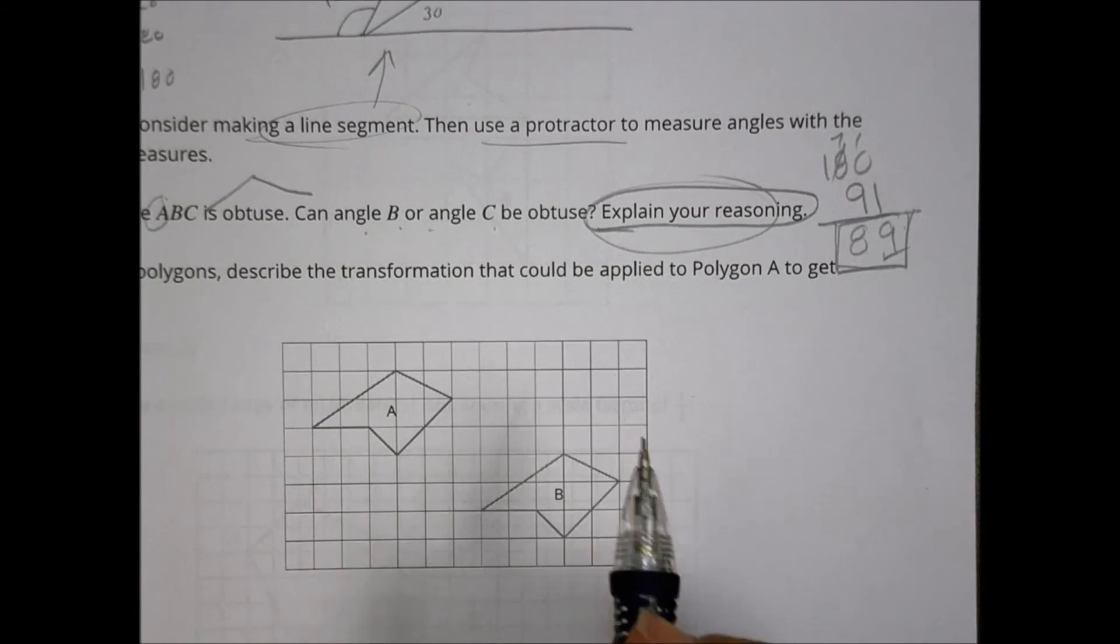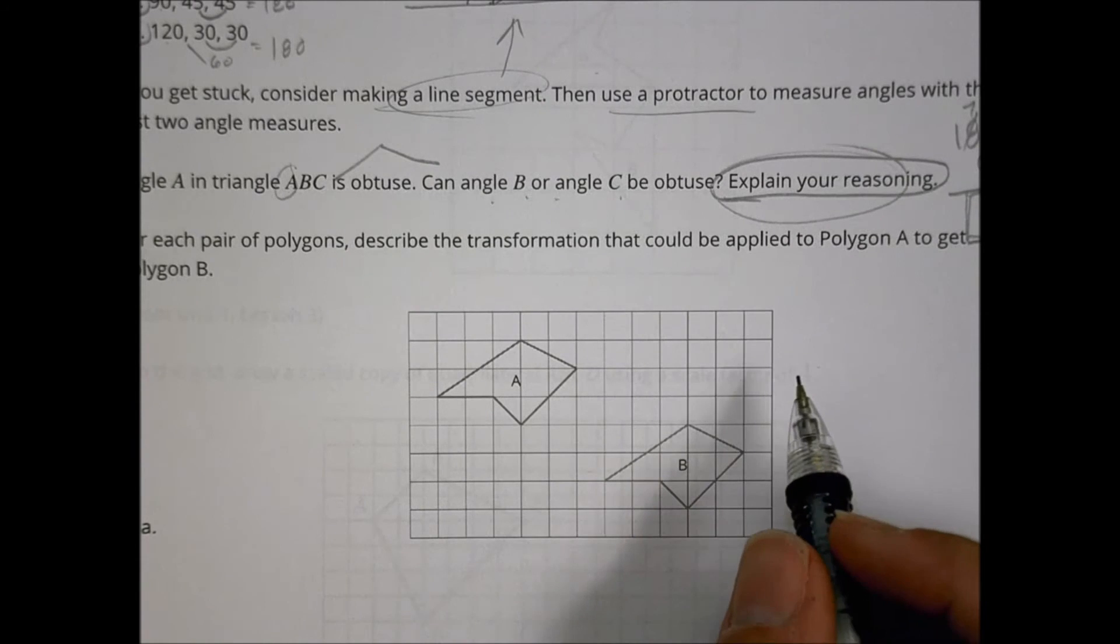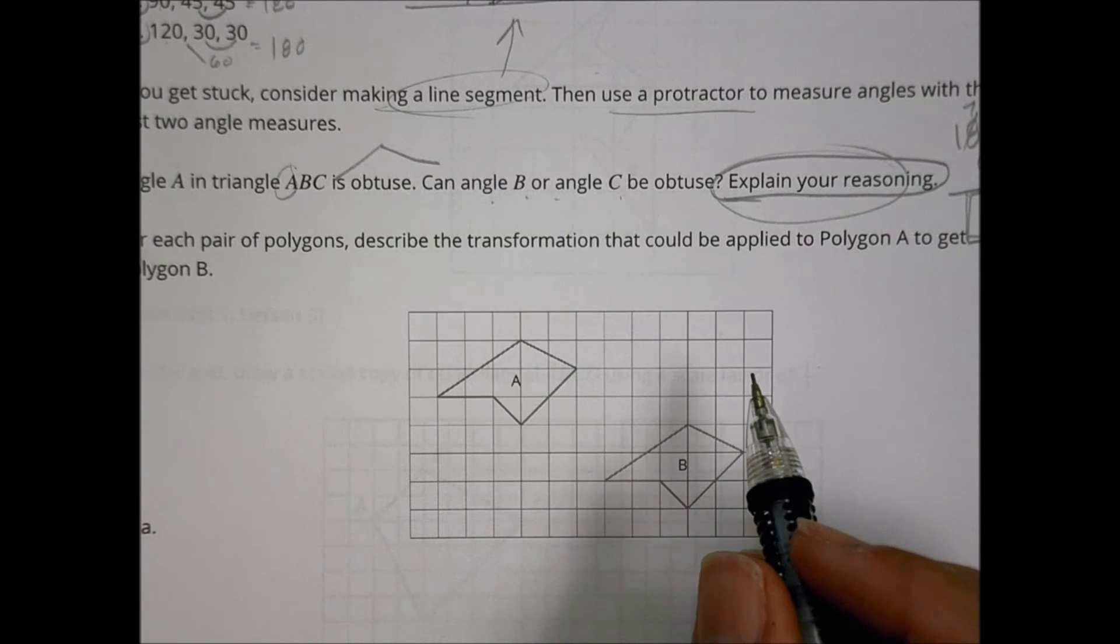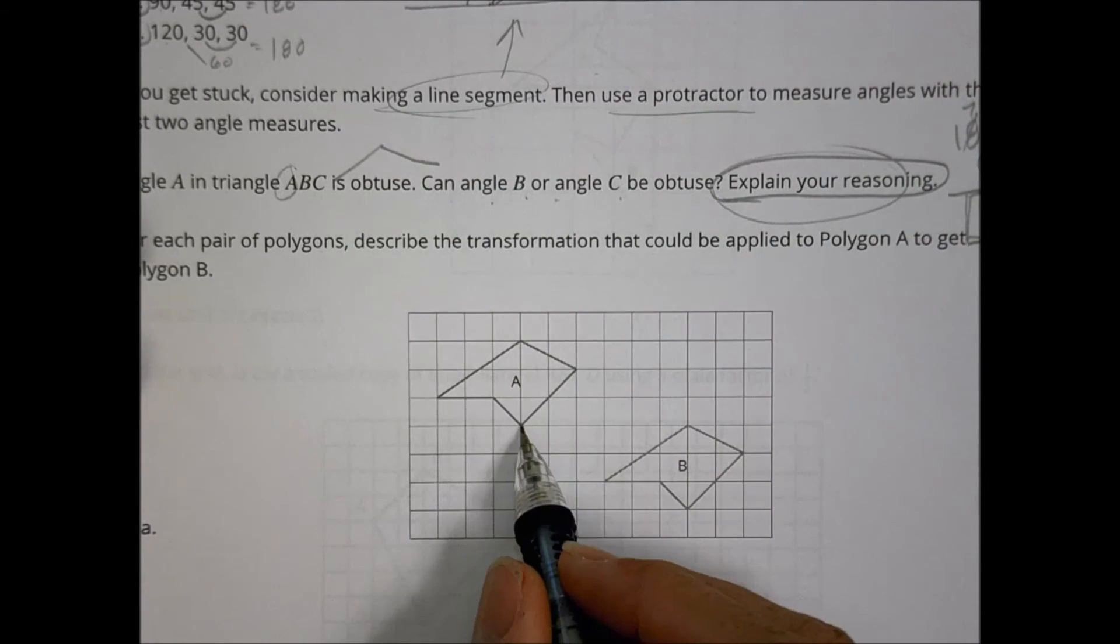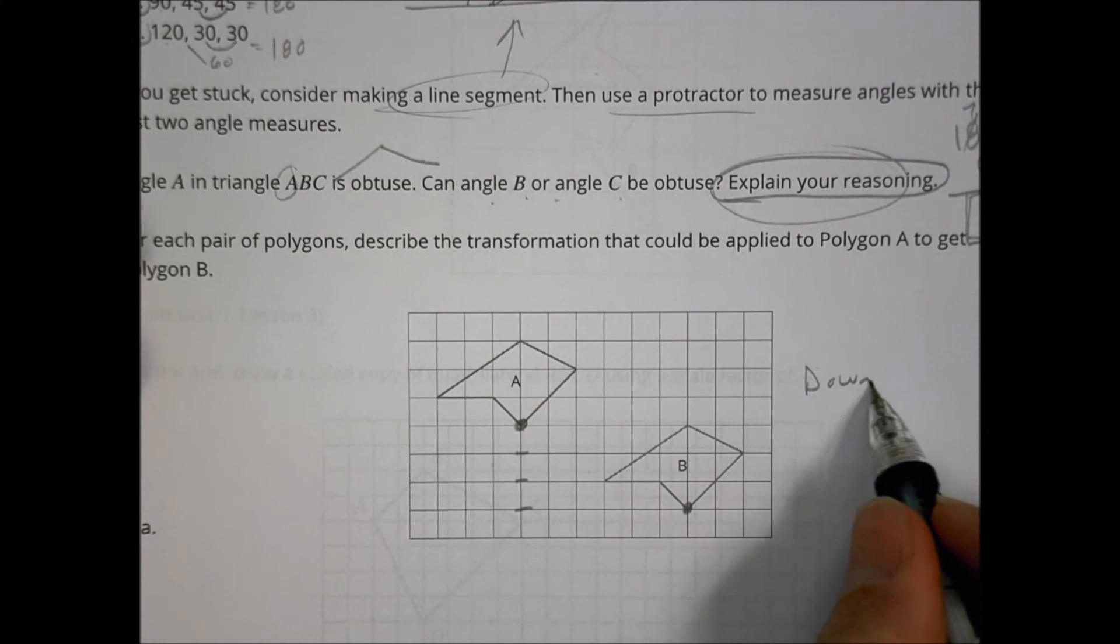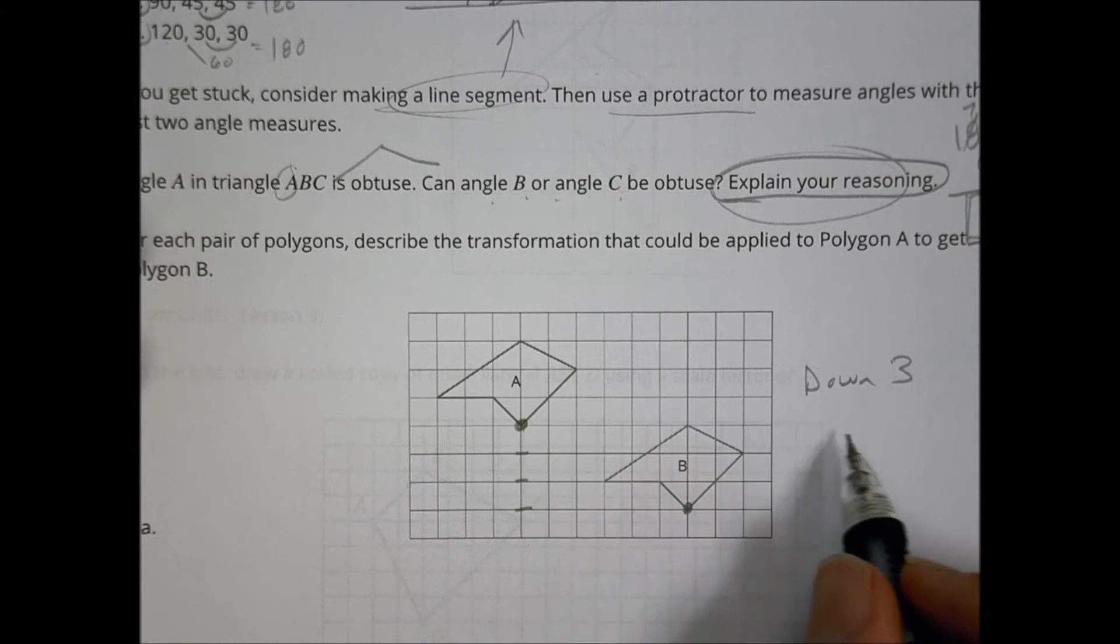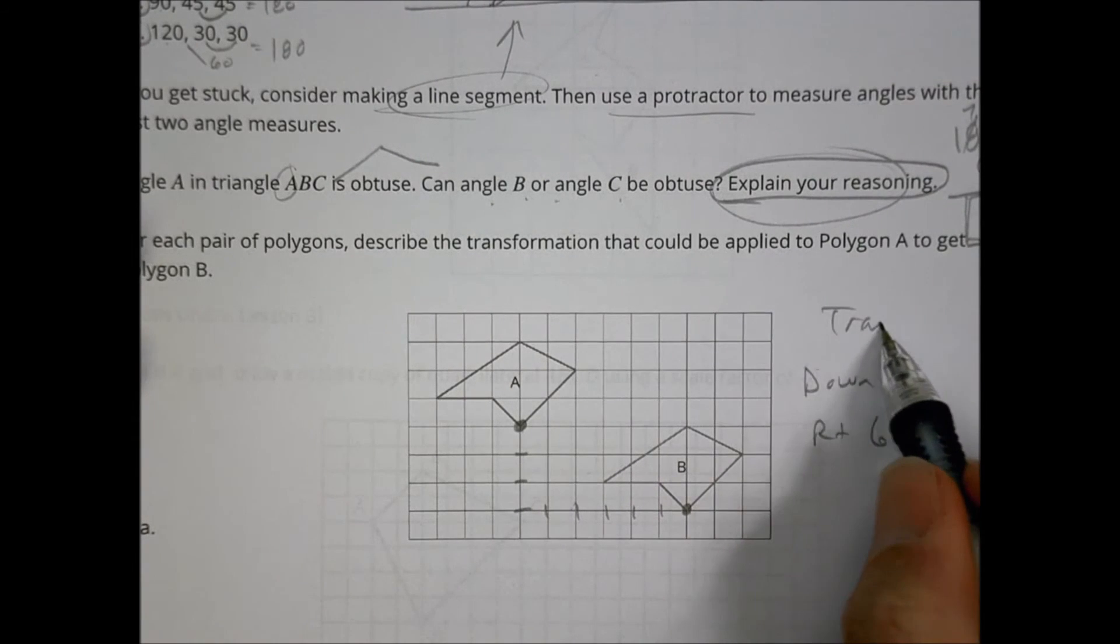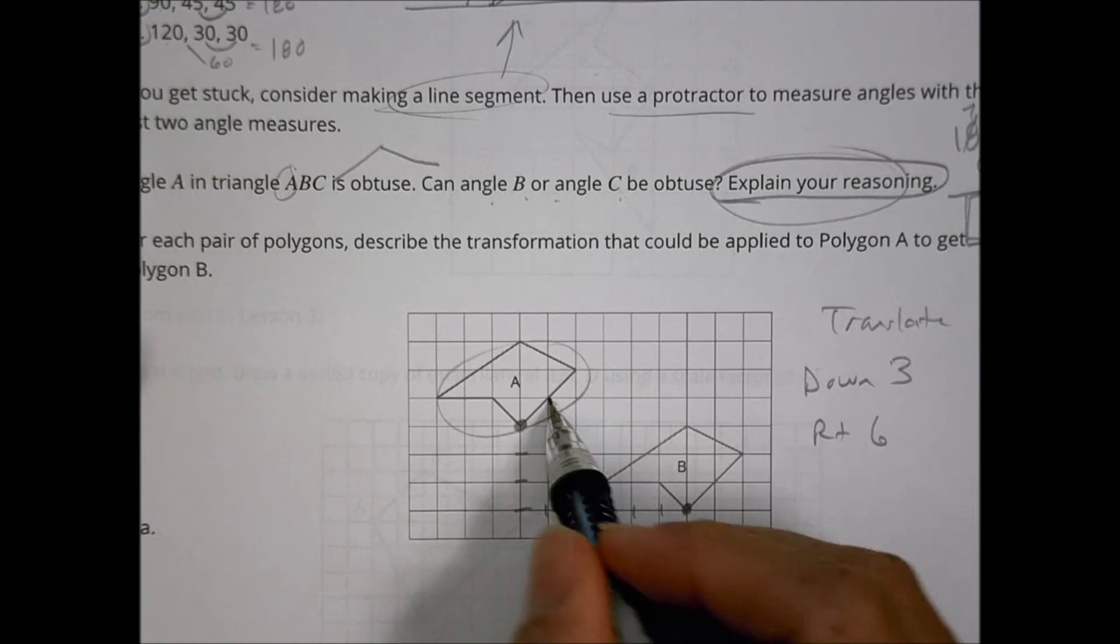Four: For each pair of polygons, describe a transformation that could be applied to polygon A to get to polygon B. And so these are ones we've done before in the past. I could take this point and I'm going to go down one, two, three. So we're going to go down or translate down three. And once I'm here, I'm going to translate to the right: one, two, three, four, five, six. Down three, right six is my translation to move this guy over to there.